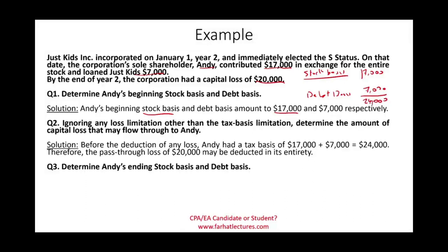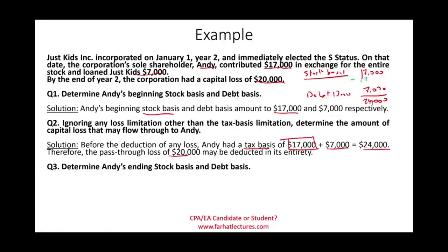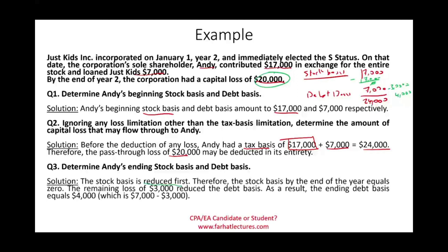Before deducting any loss, Andy has a tax basis of $24,000 — $17,000 stock and $7,000 debt. Therefore, the pass-through loss of $20,000 may be deducted in its entirety. But how is it deducted? First, you deduct from the stock basis. The stock basis goes down to zero. You still have $3,000 of remaining loss, so you deduct that $3,000 from the debt basis, leaving the debt basis at $4,000.